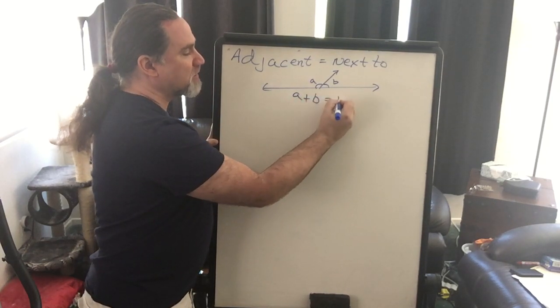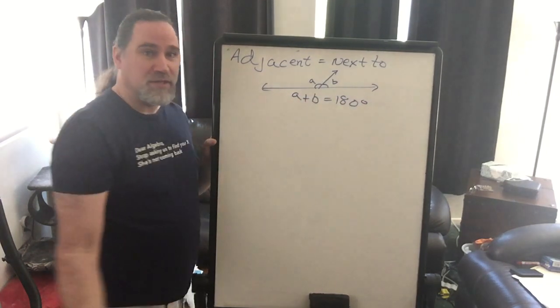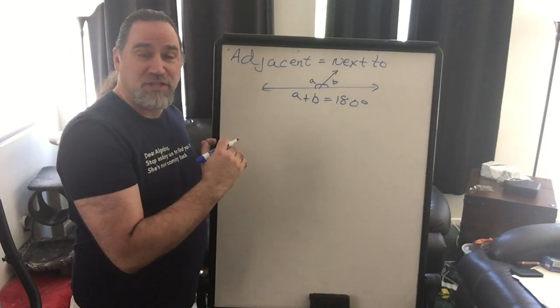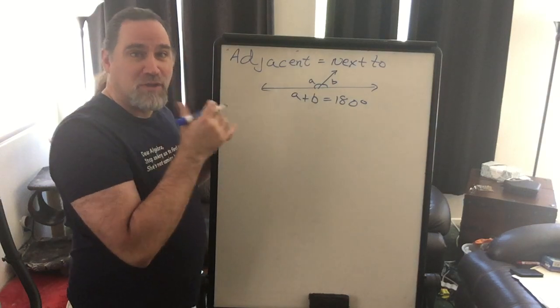In this case, those two angles are supplementary, meaning they add up to 180 degrees. So angle A plus angle B is 180 degrees because they are a straight angle that has been cut into two angles, and therefore they are supplementary.